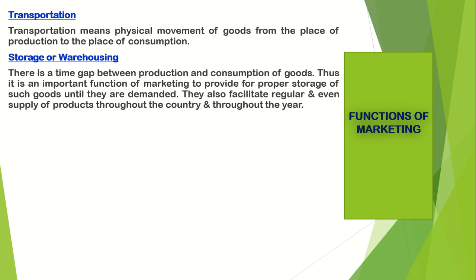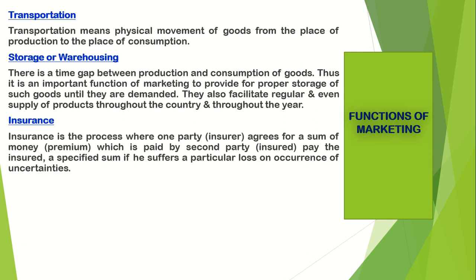The next point is insurance. Insurance is a process where one party, the insurer, agrees for a sum of money — the premium — paid by the second party, the insured, to pay the insured a specified sum if they suffer a particular loss or occurrence of uncertainties. Every business is full of uncertainties and risk, so insurance is necessary for mitigation of unforeseen losses.